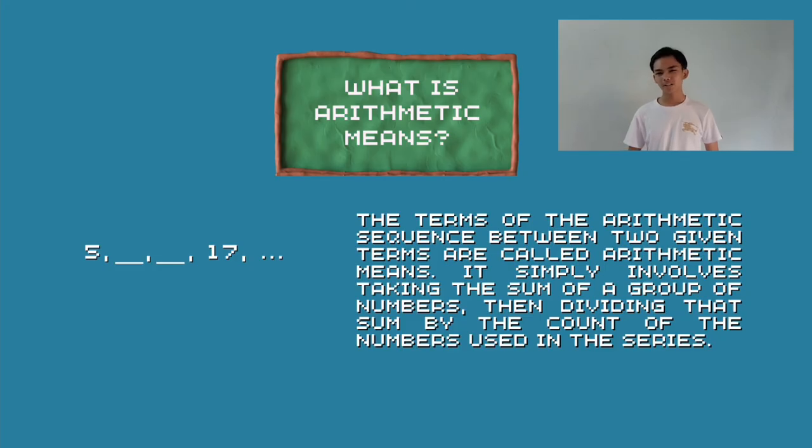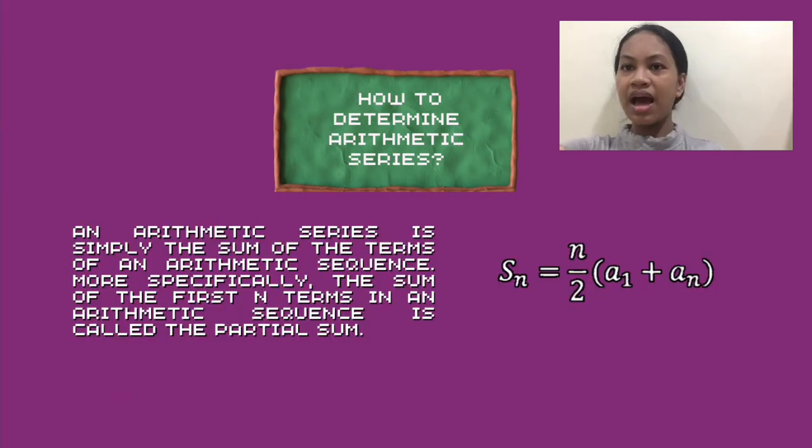What are arithmetic means? The terms of the arithmetic sequence between two given terms are called arithmetic means. It simply involves taking the sum of a group of numbers, then dividing that sum by the count of the numbers used in the series. An arithmetic series is simply the sum of the terms of an arithmetic sequence. More specifically, the sum of the first n terms in an arithmetic sequence is called the partial sum.